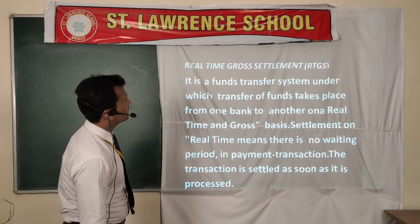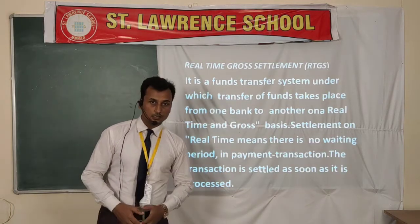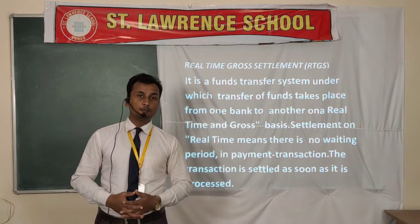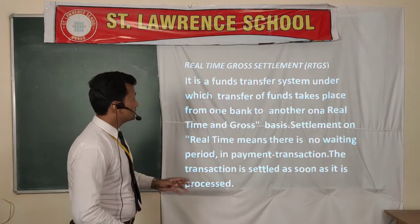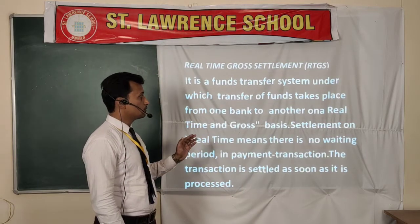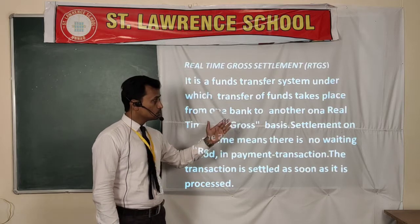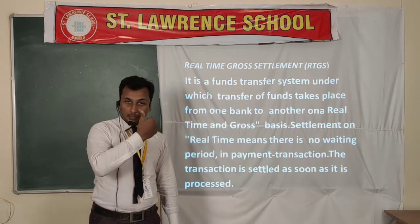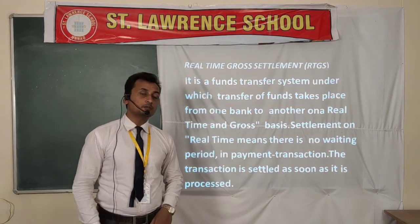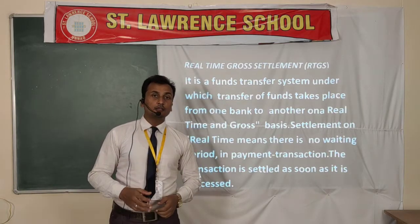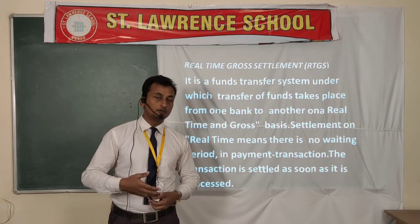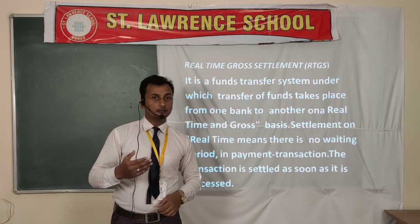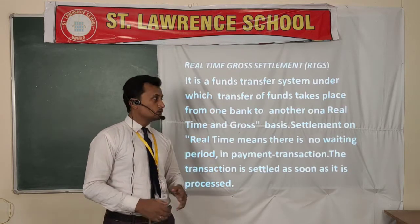The first method is Real Time Gross Settlement, meaning RTGS. RTGS is a very popular method for making payment in a business. It is a fund transfer system under which transfer of funds takes place from one bank to another bank. You can make payment to any company or any individual, and the receiver will receive the payment almost immediately.